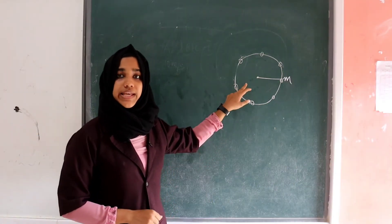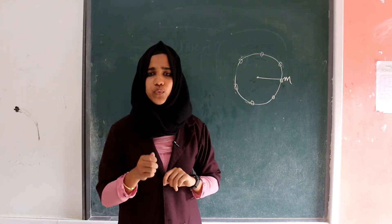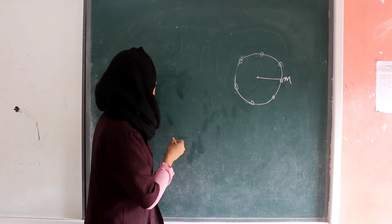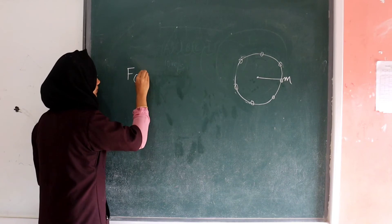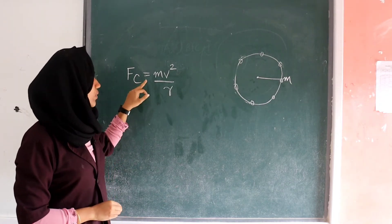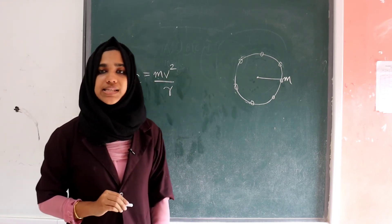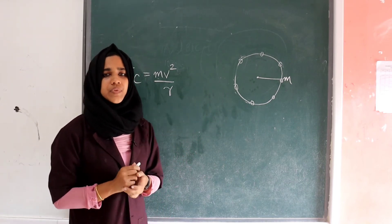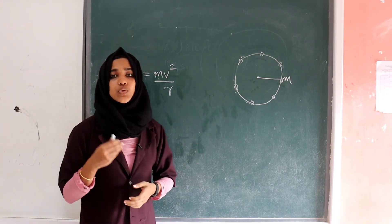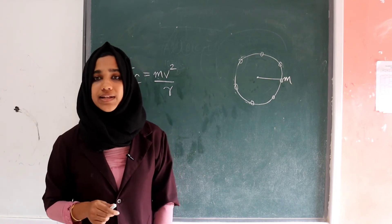Here is an object of mass m moving with velocity v along a radius r. The formula for centripetal force is mv²/r, where m is mass, v is velocity, and r is the radius. When a stone is in circular motion, the force the hand exerts through the string becomes the centripetal force.